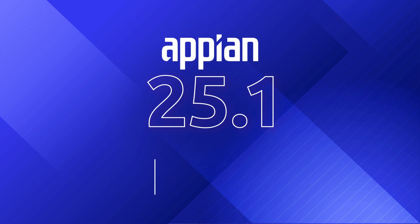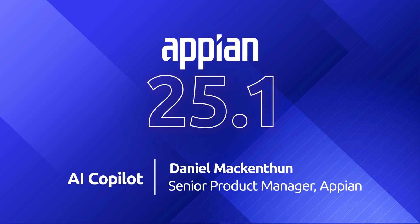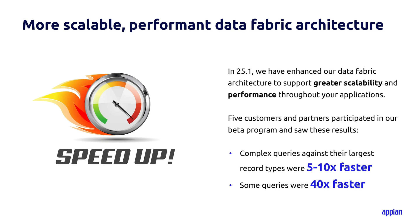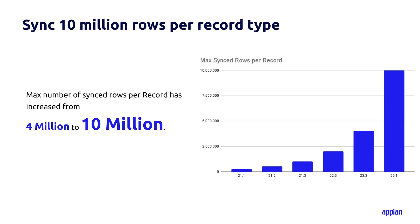Appian is committed to providing a scalable foundation for your mission-critical applications. In this release, we've enhanced our Data Fabric architecture to support greater scalability and performance throughout your applications and Process HQ. Over the past few months, Appian's customers and partners participated in the Data Fabric enhancements beta program, where participants experienced five to ten times faster performance for complex queries against their largest record types — with some queries improving by as much as 40 times. Participants also experienced up to five times higher write throughput, a 90% reduction in storage space used by synced record types, and an increase in the synced row limit from 4 million to 10 million rows per record type.